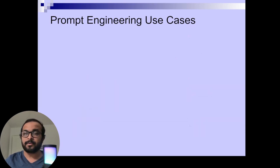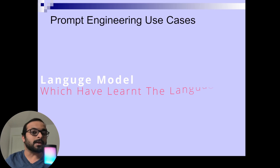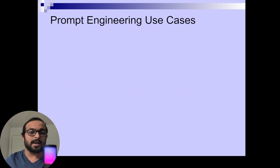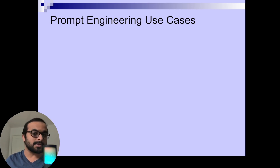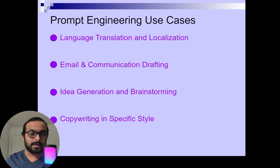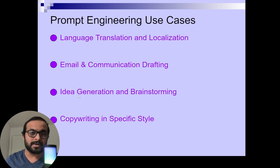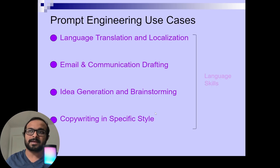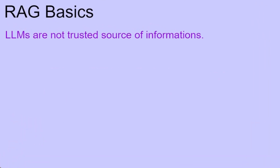One thing you must understand is that when you are interacting with an LLM, you are interacting with a large language model — that means you are interacting with a model that understands language properly. It does not mean that the information produced by the LLM is going to be appropriate. That is why if you are going to build an AI application solely dependent on prompt engineering, those use cases should be related to language specifically — such as language translation, localization, email drafting, brainstorming, or copywriting in a specific style, because here you are using the language skill more than the informational skill. However, we must remember that LLMs are not a trusted source of information.